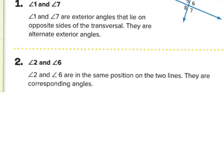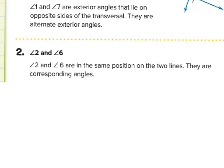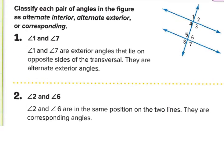Let's try number two: angle two and angle six. One is an exterior angle and one is an interior angle, but you can see they both have the same parallel line and the same transversal. They are corresponding to one another. Angle two and angle six are in the same position on the two lines — they are corresponding angles.